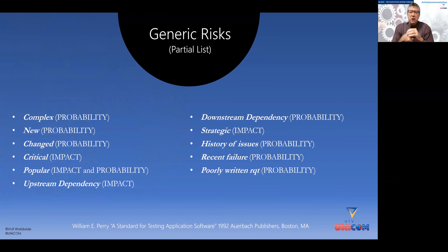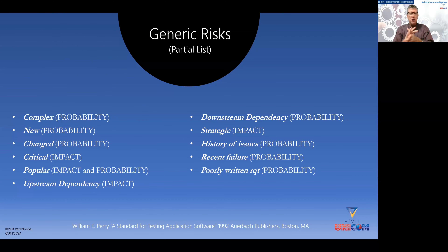There are factors which could influence either impact or likelihood. Ask yourself: is the code complex? If so, that's going to raise the probability. Is it new? Take a look at this partial list written by William Perry of Quality Assurance Institute fame — these are all very important factors that could influence probability, impact, or perhaps even both. For example, is it popular functionality utilized a great deal?